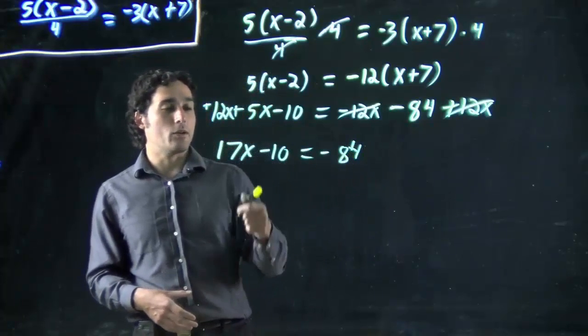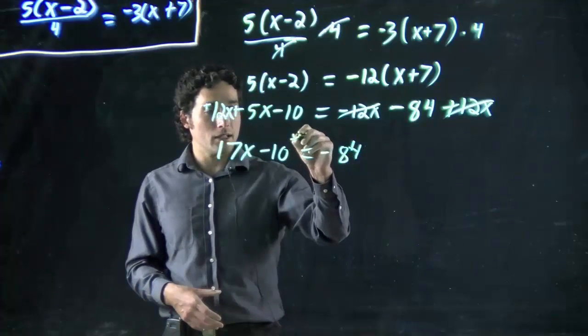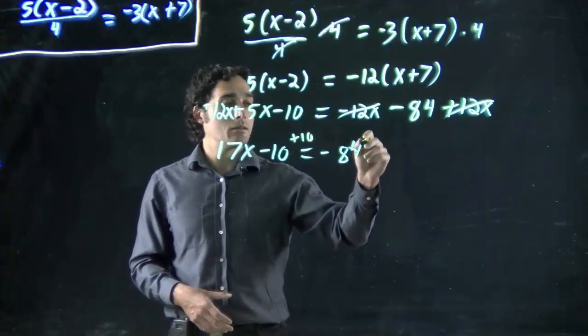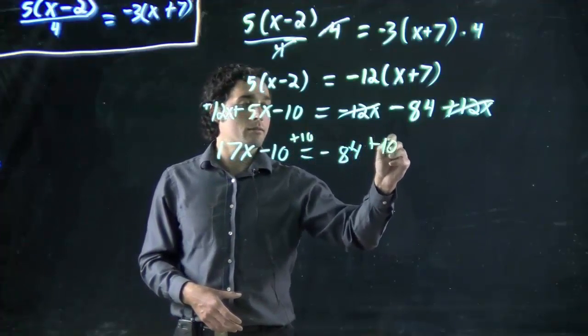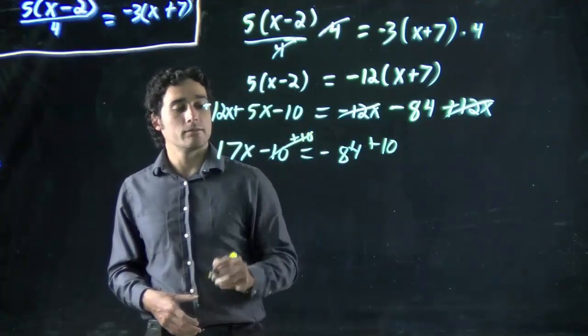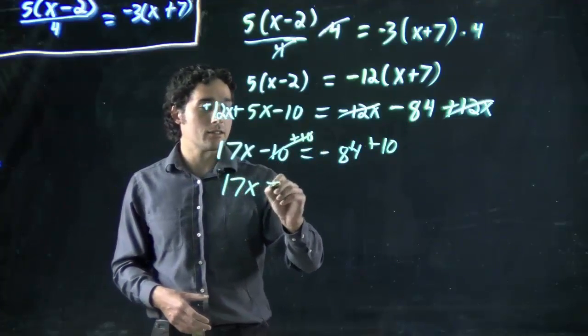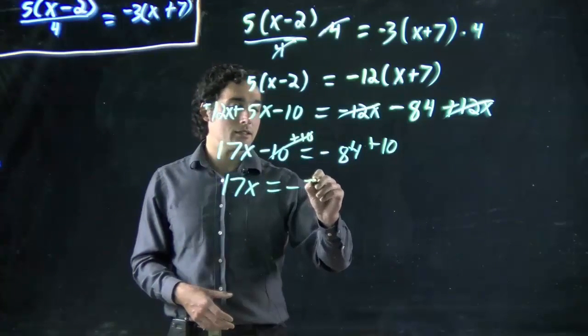And then, alright, I want to bring this to that side. I'm going to have to do plus 10. Plus 10. These cancel. I get 17x equals minus 74.